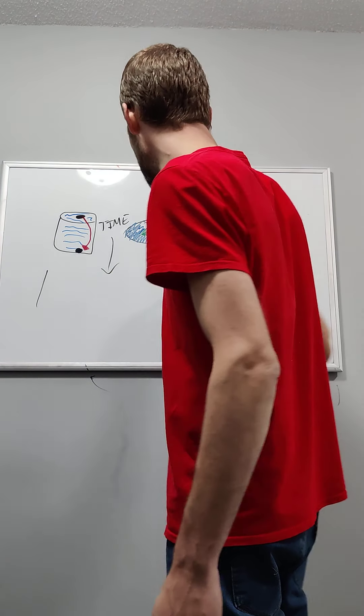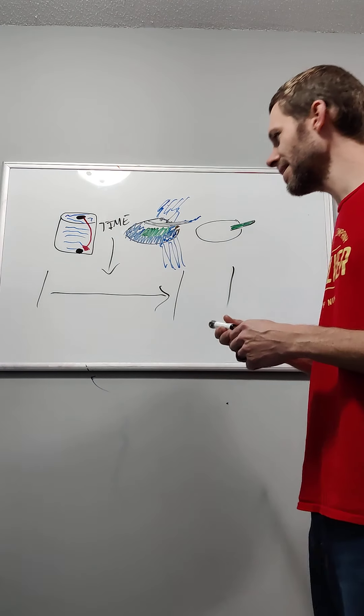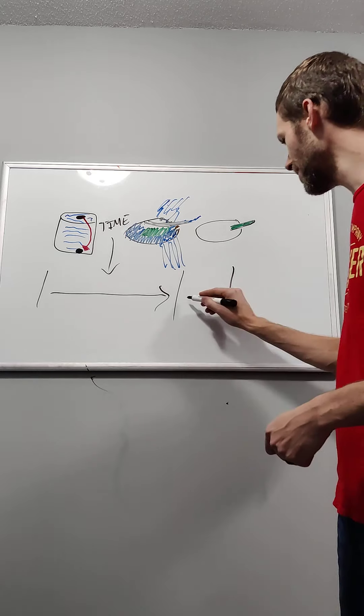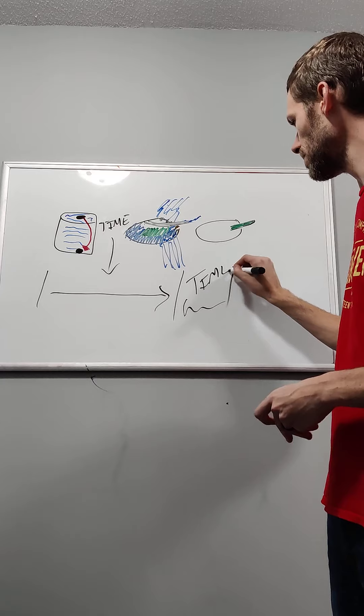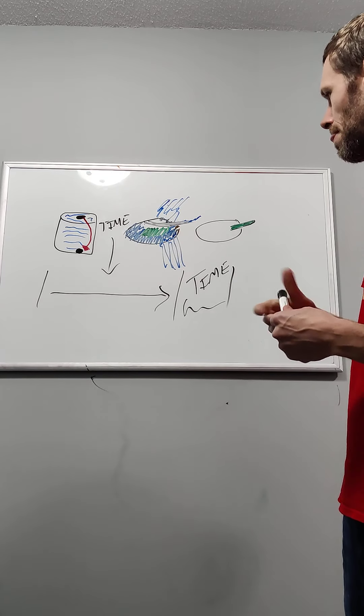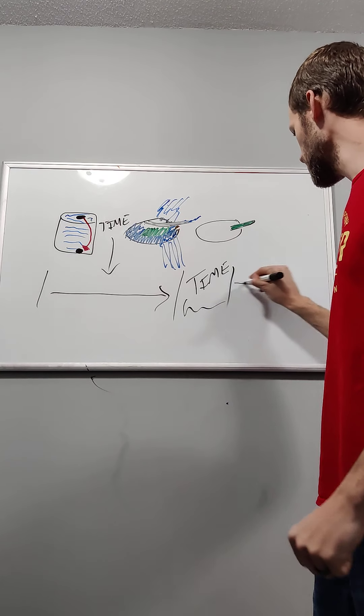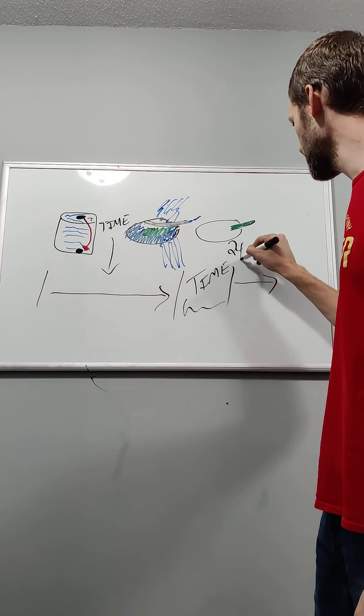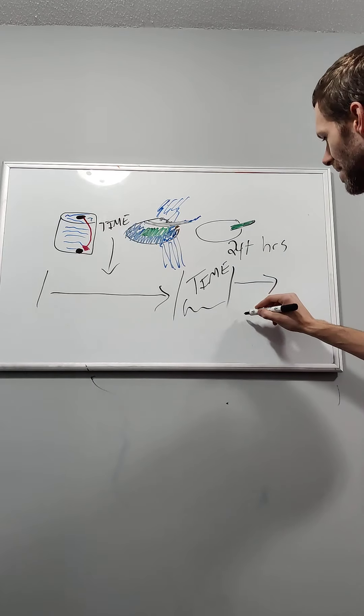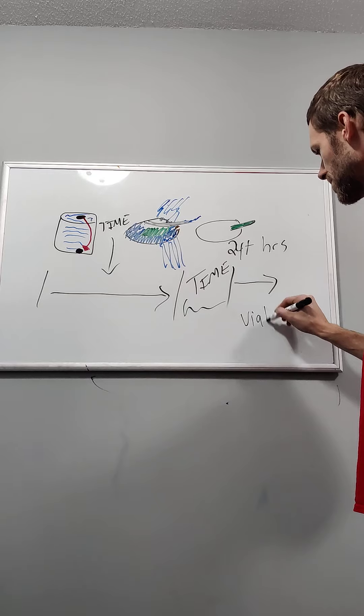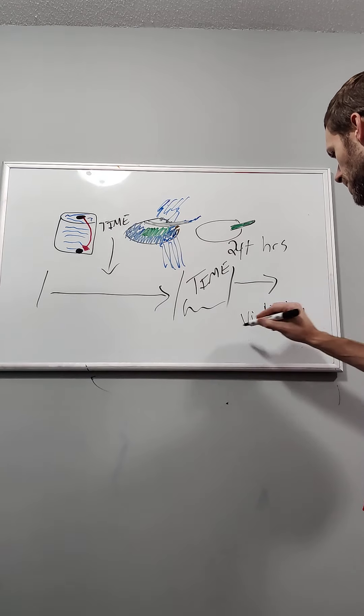This time window is real. It used to be out here, now we're somewhere over here. We only have a little window of time here before we start losing viability. If we start going too far, so if this is 24 plus hours and we start going beyond there, we're going to lose our viability of the seed.